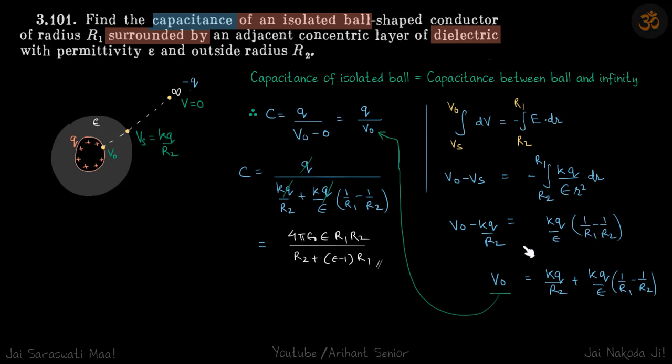We do this simple integration and get our V0 in terms of Q. When we divide this, Q will get cancelled and we will get our answer, which is the capacitance of an isolated ball.